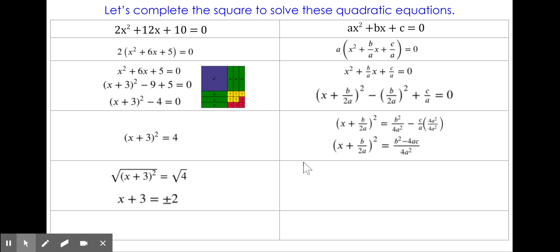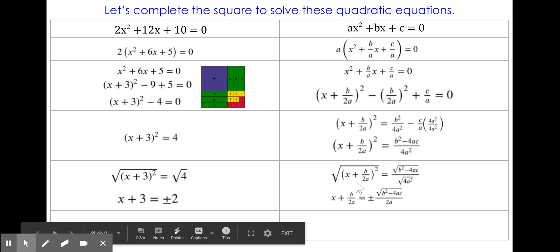I do the same thing on the right. I take the square root of both sides. On the right, you can see that I show that I'm taking the square root of the numerator and the denominator, because I can simplify my denominator. So we have x plus b over 2a equals plus or minus the square root of b squared minus 4ac, because I cannot simplify that, divided by 2a.